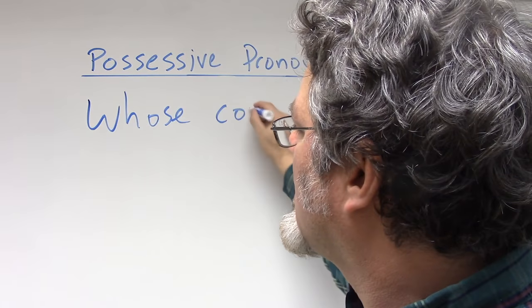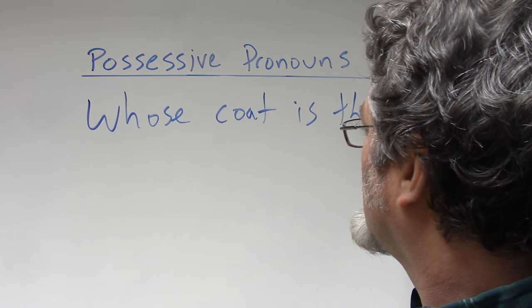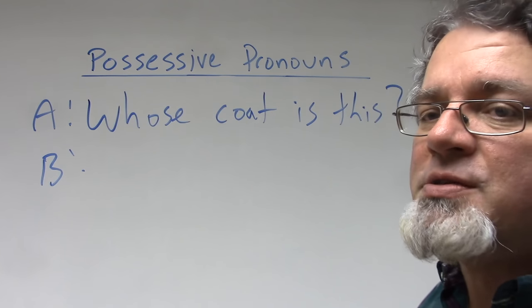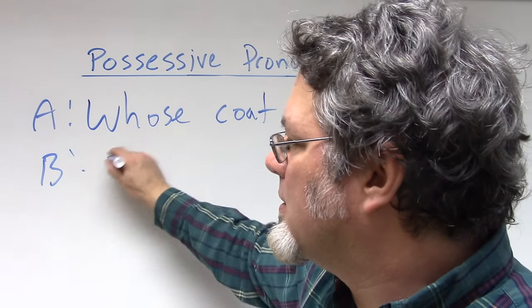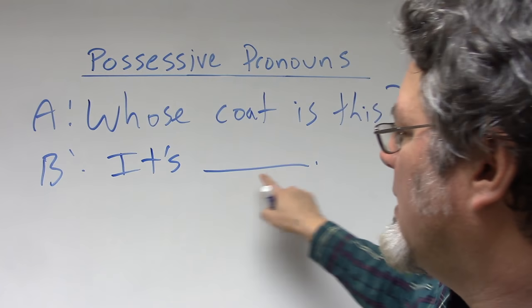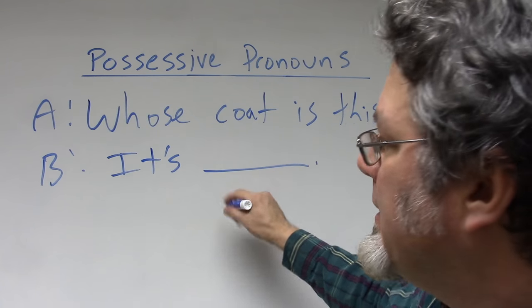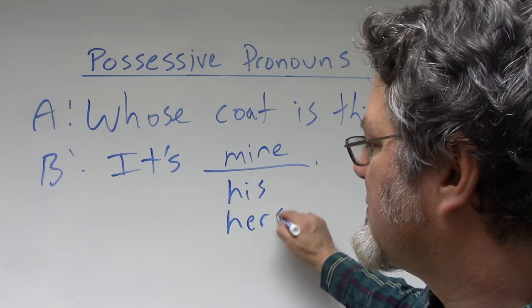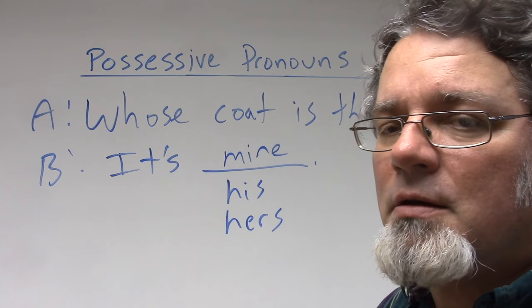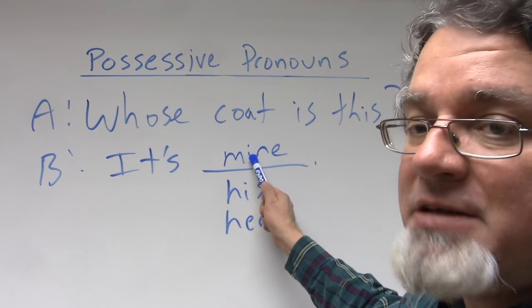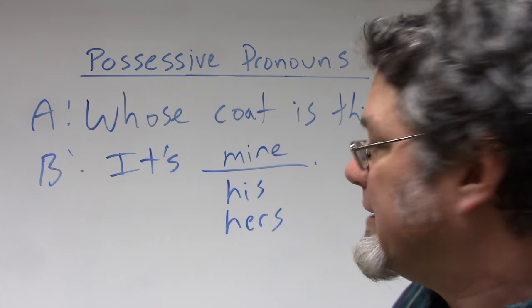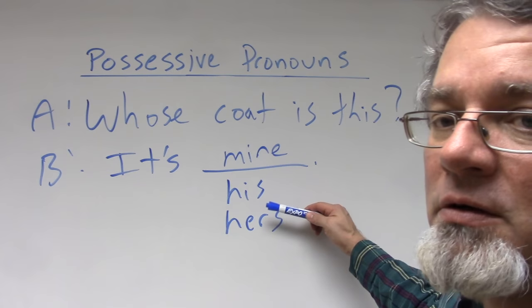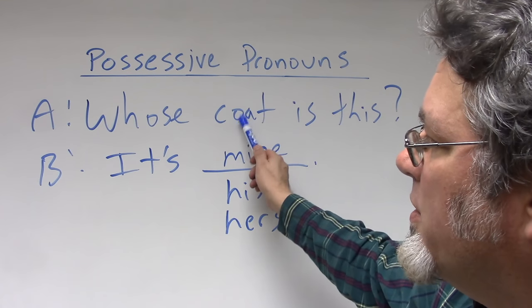'Whose coat is this?' If two people are talking and the first person asks 'whose coat is this?', somebody answers 'It's mine,' 'It's his,' or 'It's hers.' It would be possible to use the possessive adjective — 'It's my coat,' 'It's his coat,' 'It's her coat' — but all you really need is the possessive pronoun, and we know that it represents the word 'coat.'